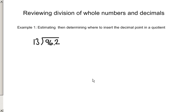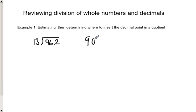We learned that through estimation we can determine where to insert a decimal point in our quotient. So if we look at the problem 96 and 2 tenths divided by 13, we see a decimal point in the dividend. First we're going to come up with an estimation. 13 is close to 10, and 96 is close to 100 or 90. So with 90 divided by 10, my estimation would be 9, and 100 divided by 10 would be 10. My quotient will be somewhere between 9 and 10.